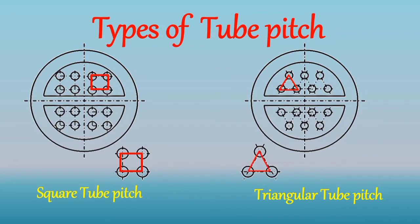With a triangular pitch arrangement, a larger number of tubes can be accommodated in a given shell diameter compared to a square pitch arrangement. In a triangular pitch arrangement, large turbulence is created in the shell side fluid. If the fluids are very clean, a triangular pitch arrangement is used.